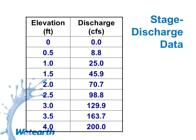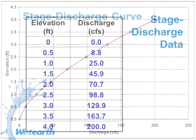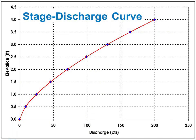Stage-discharge data is sometimes used. Again, you'd have this calculated. You're basically just telling the model to use these values instead of letting it calculate based on the pipes.